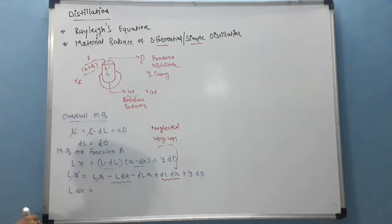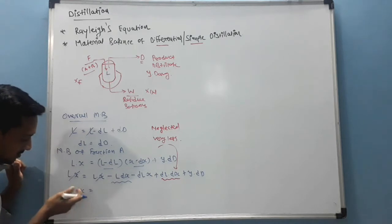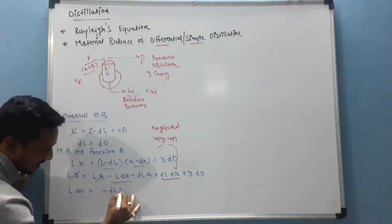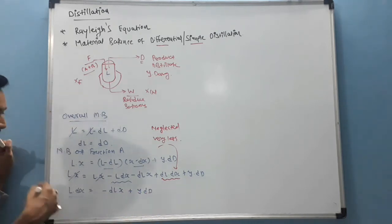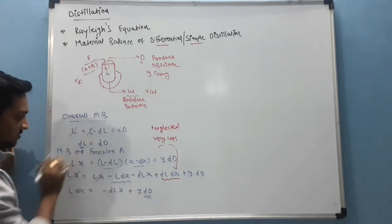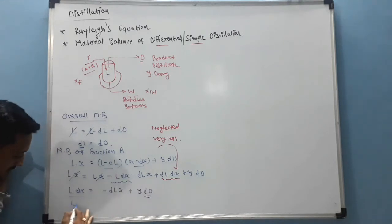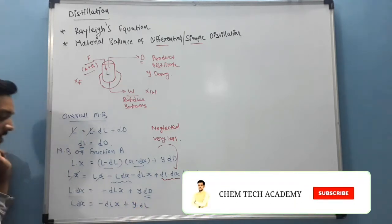So LDX minus DLX plus YDD. We have DD is equal to DL. So put DL instead of DD.